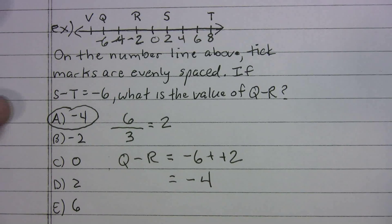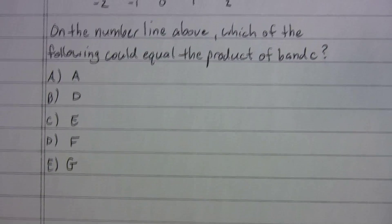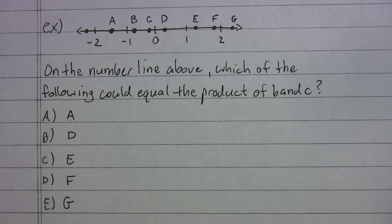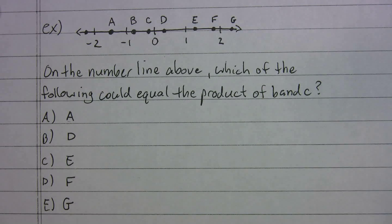All right. Let's do a third one. So far the first two are kind of concerned with distance. I want to give you an example that really doesn't care about distance. It has more to do with number properties. We have negative things, we have fractions. What's going on? So this one says, on the number line above, which of the following could equal the product of b and c?